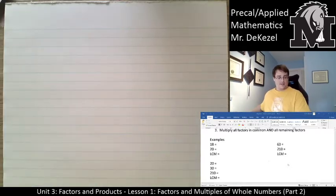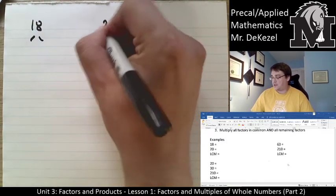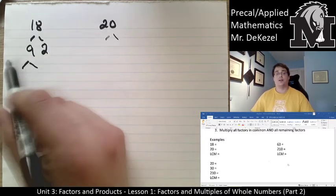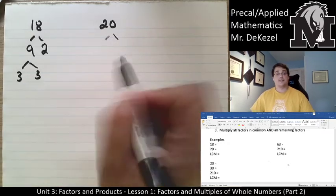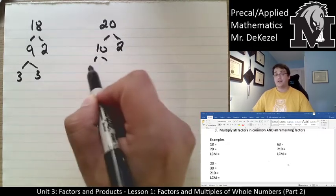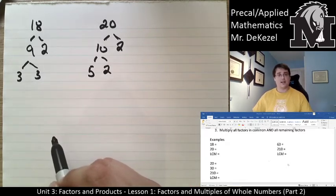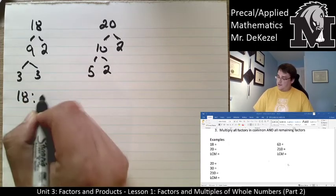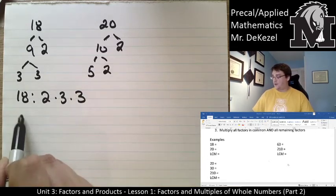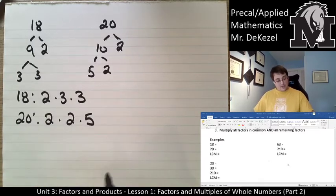Let's jump right in and do the first example: 18 and 20. We are going to do their prime factor trees first. 18 is 9 times 2, and 9 is 3 times 3. For 20, I'd say 10 and 2, then 10 breaks down into 5 and 2. Writing them on top of each other: 18 is 2 times 3 times 3, and 20 is 2 times 2 times 5.